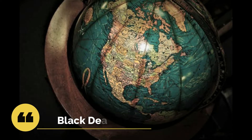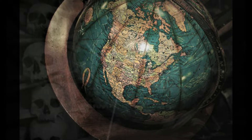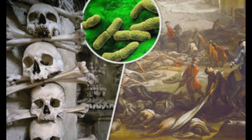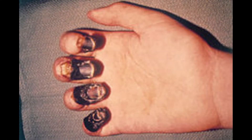Black Death — this was a specific type of plague that hit Europe, Asia, and North Africa in 1346 AD and continued till 1353 AD, causing deaths of about 75 to 200 million people — almost 60 percent of the population of Europe at that time.